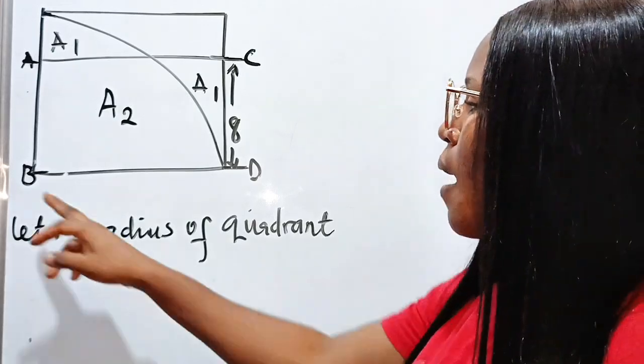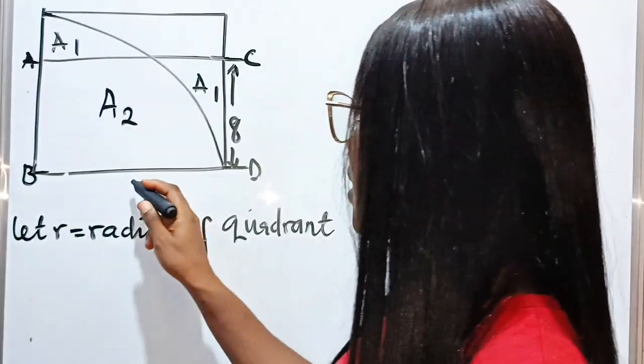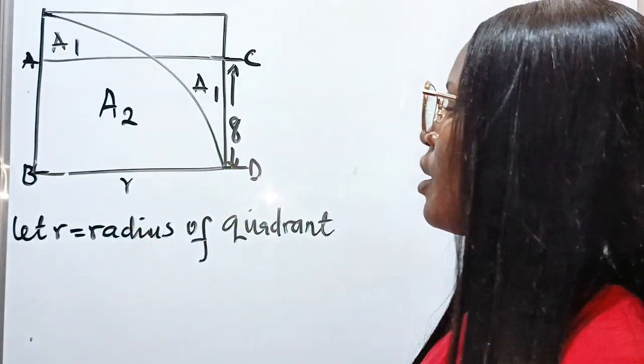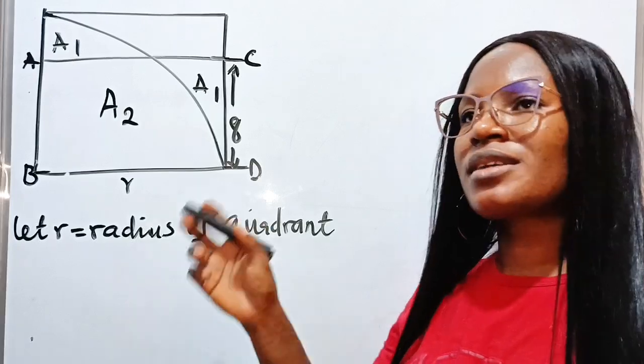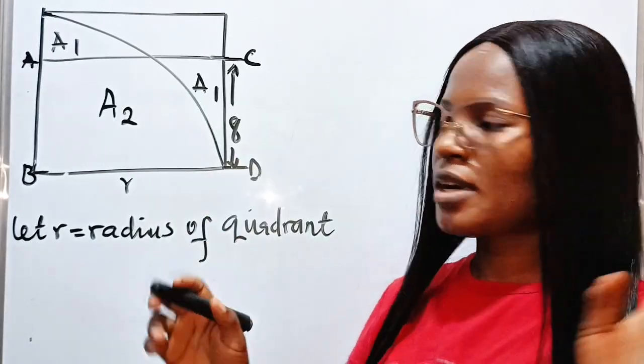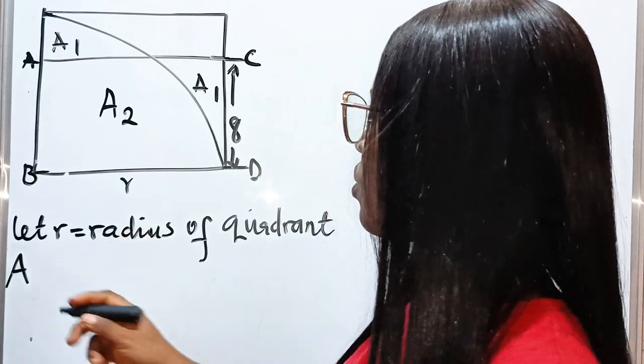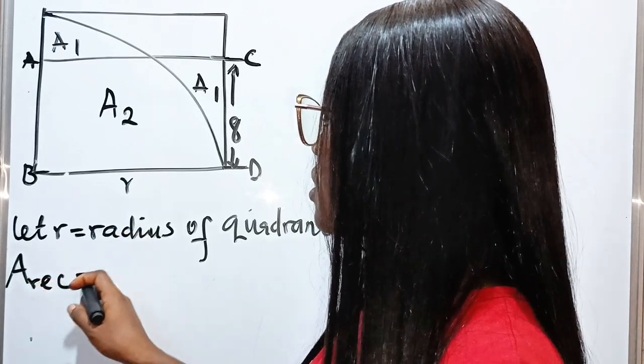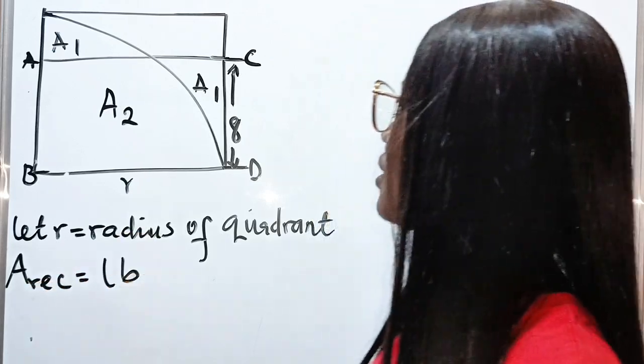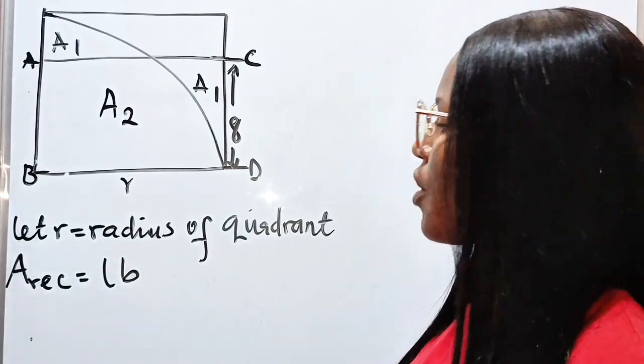That means B, D is R. Now, remember that to find the area of a rectangle. Now, area of a rectangle is equal to length multiplied by the breadth.